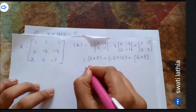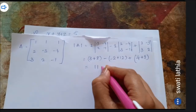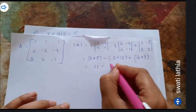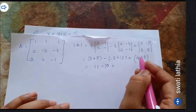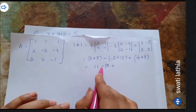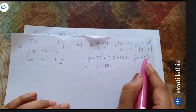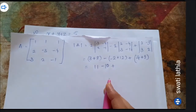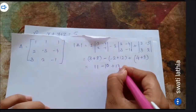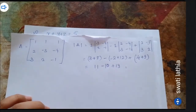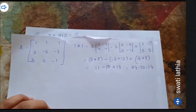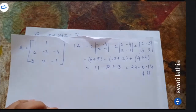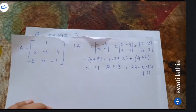So: 11 minus 12 gives minus 1, subtract 10, and the last term gives 12 minus 4 plus 9, that is 13. So we get: 24 minus 10 gives 14. Since 14 is not equal to 0, the determinant is not 0, so we can find A inverse.